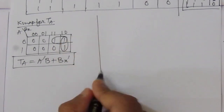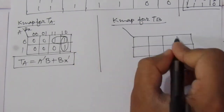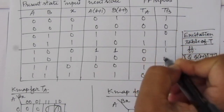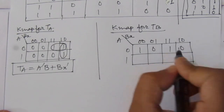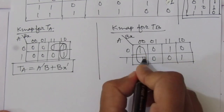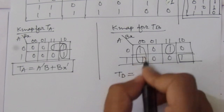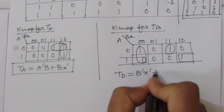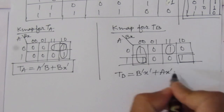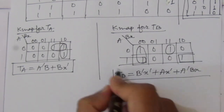Now we find the K-map for TB. We have a three-variable map. Filling in TB values: 1, 0, 0, 1, 1, 0, 1, 0. Grouping gives three terms. So TB equals B̅X̅ plus AX̅ plus A̅BX.